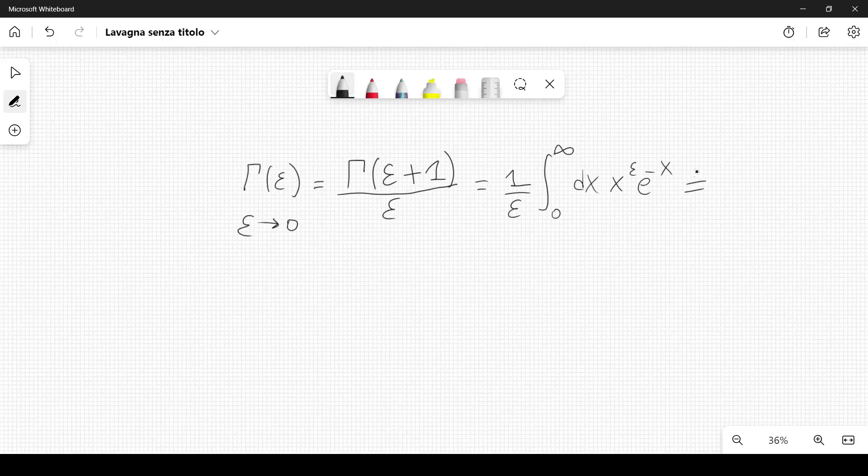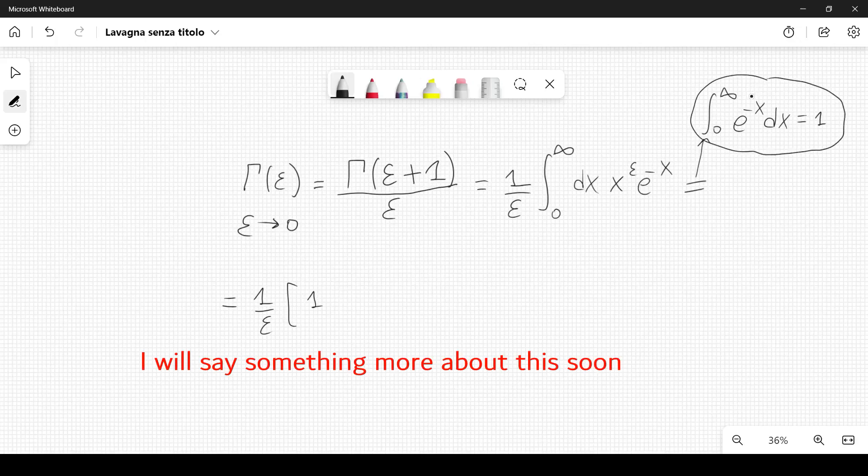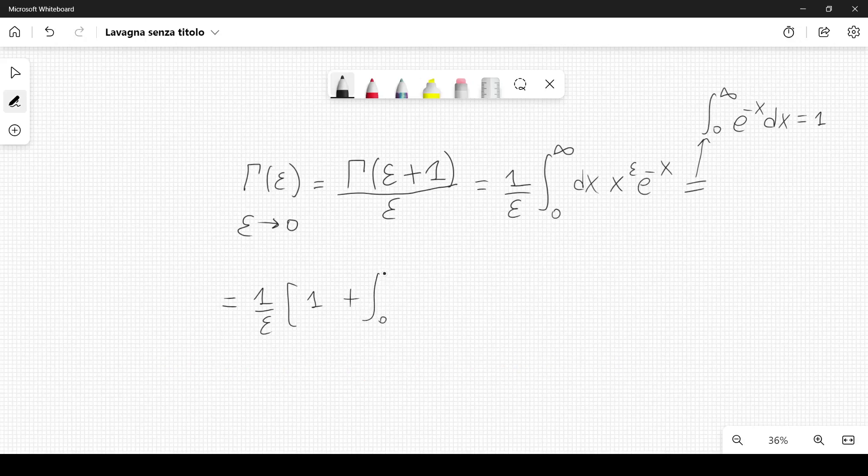This is equal to, if we remember that the integral from 0 to infinity of e to the minus x dx equals 1, this can be written as 1 over epsilon times the quantity 1 plus integral from 0 to infinity of x to the epsilon minus 1, e to the minus x dx.